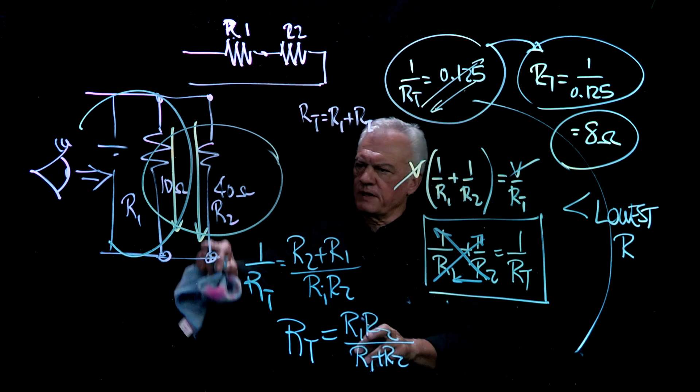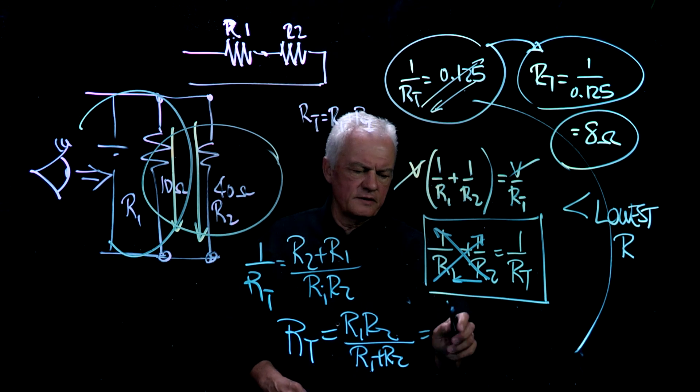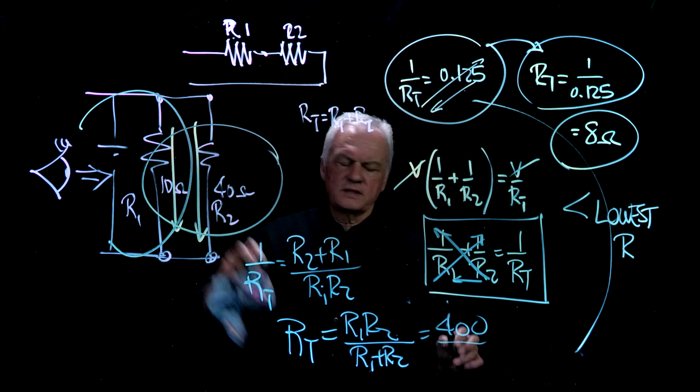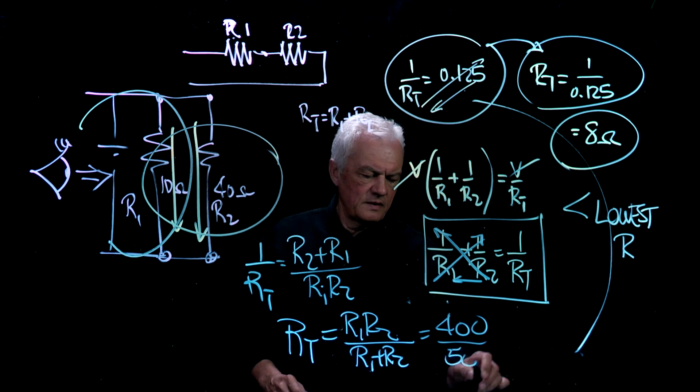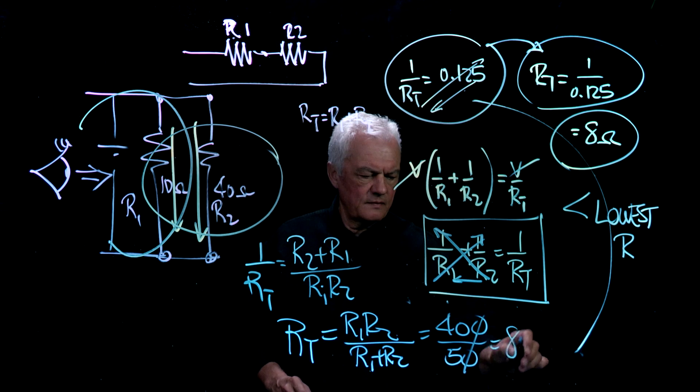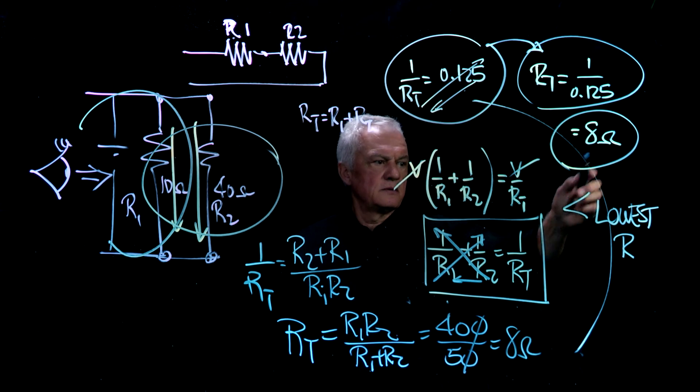If I multiply 10 times 40, I'll have 400, and 40 plus 10 is 50. Same number, same number.